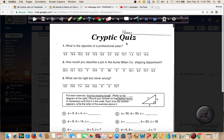All right, cryptic quiz. So we have three questions. What is the opposite of a professional eater? How would you describe a job in the Acme Mitten Company shipping department? And number three, what can be right but never wrong?